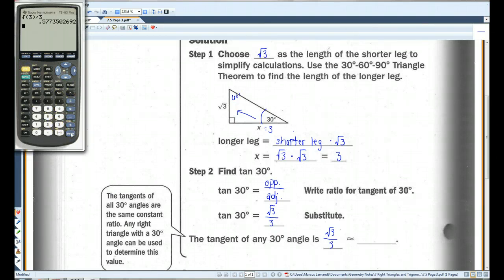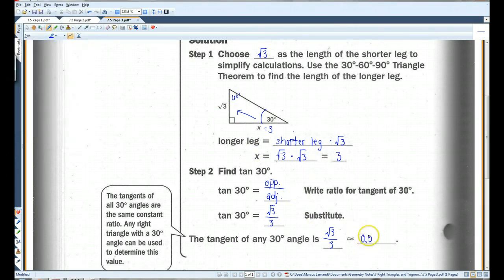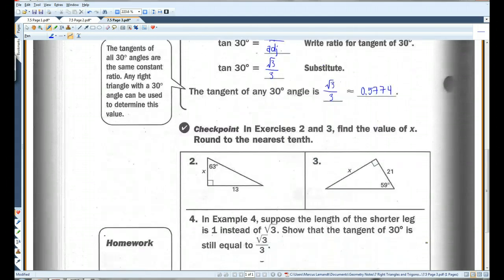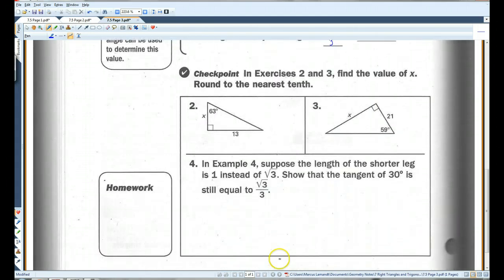0.577. No, that's another one. 0.5774. Alright. You guys can do the checkpoint, and that's all.